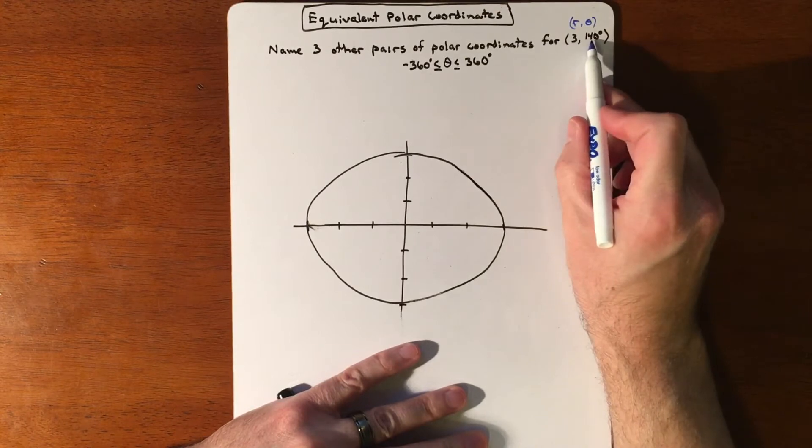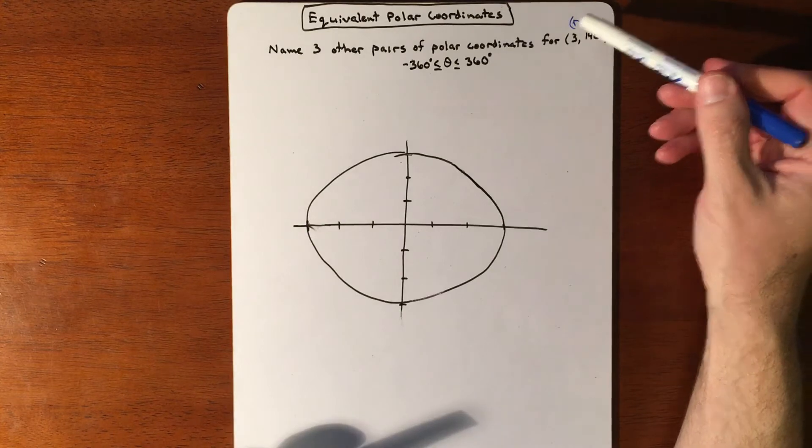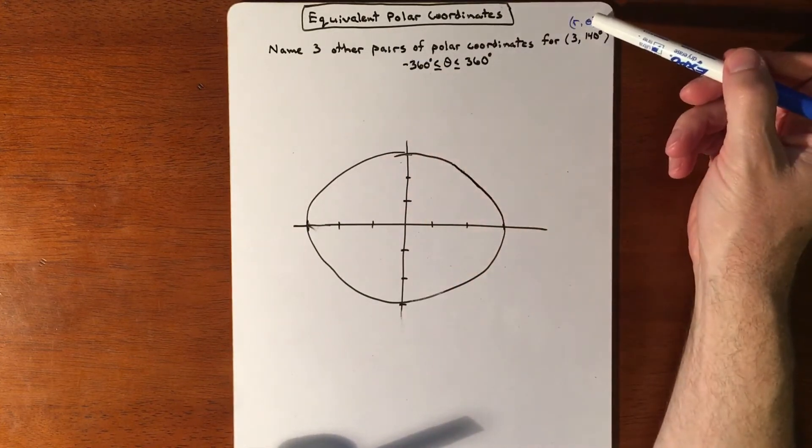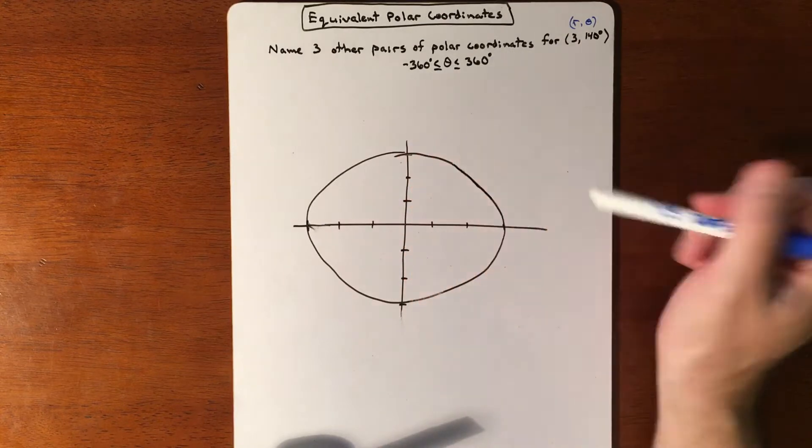The radius is 3, the degree measurement is 140. We're going to restrict the answers that we're about to create so that our angle measurements are locked somewhere between negative 360 and positive 360.